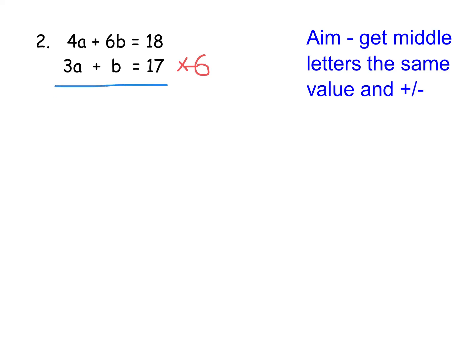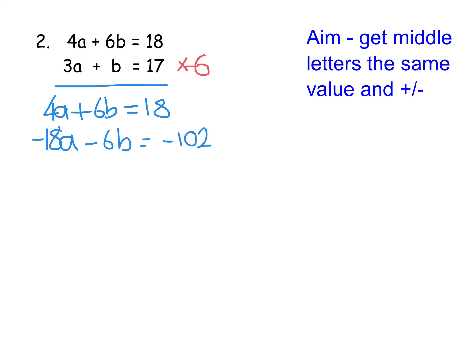So we leave the first equation alone and rewrite it: 4a plus 6b equals 18. For the second equation, I multiply everything by negative 6 — be careful here, it's really easy to mess up. That gives us negative 18a, negative 6b, and negative 102 (since 6 times 17 is 102). Then I underline it and treat it as a big add sum. So 4 add minus 18 is just 4 take away 18, giving minus 14a. The plus and minus 6b cancel out. Then 18 take away 102 is negative 84.